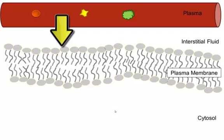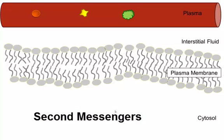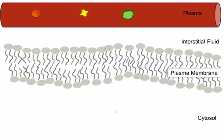This brings up an important point: how does the extracellular signal of a hormone get transmitted into the cell? This is commonly accomplished using second messengers — small molecules such as cyclic AMP or calcium. Second messengers relay information from the first messenger, the hormone, into the cell. These second messengers are often produced using common proteins associated with the plasma membrane called G-proteins.